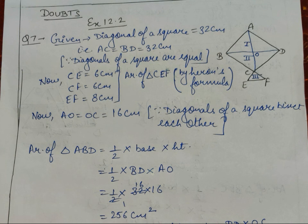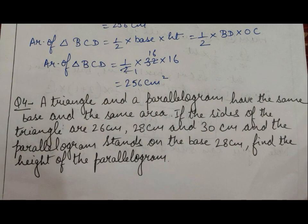For triangle BCD, we again use the formula half × base × height, where base is BD = 32 and height is OC = 16. Solving further, area of triangle BCD = 256 cm².